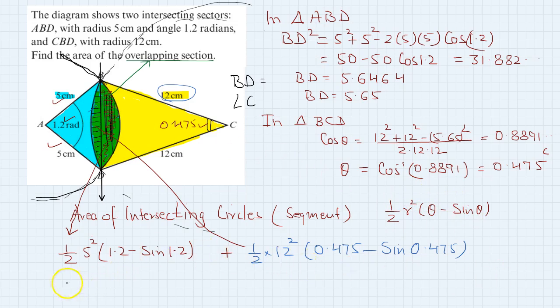That equals 3.35 plus 1.3119, which equals 4.46. That is the area of the overlapping section of these two circles.